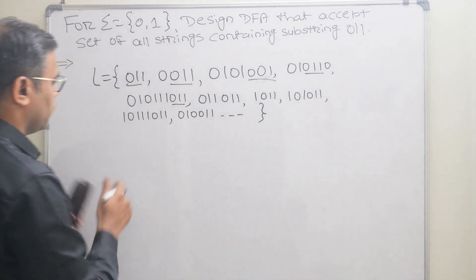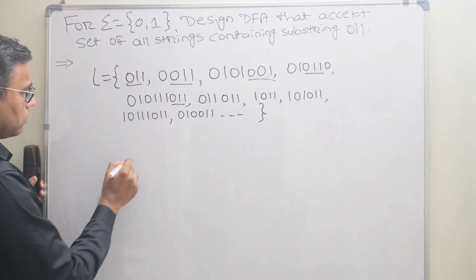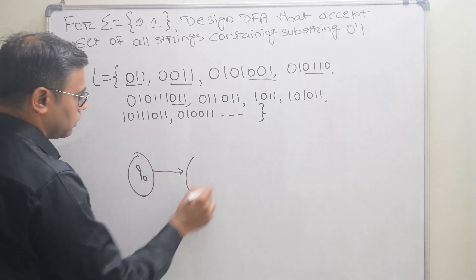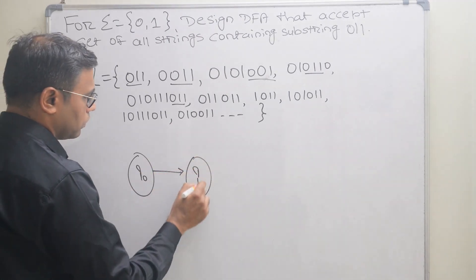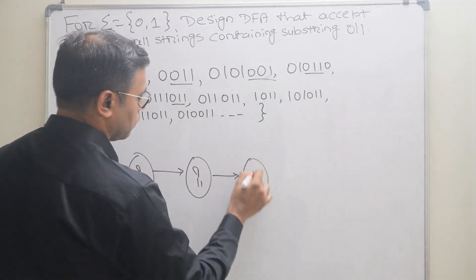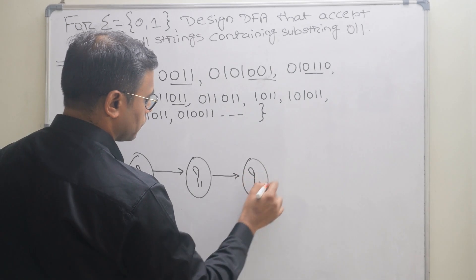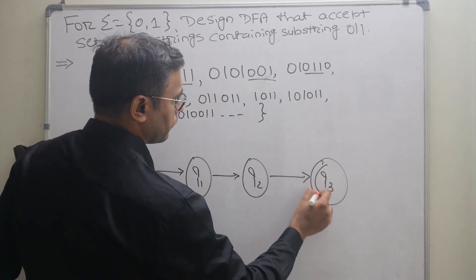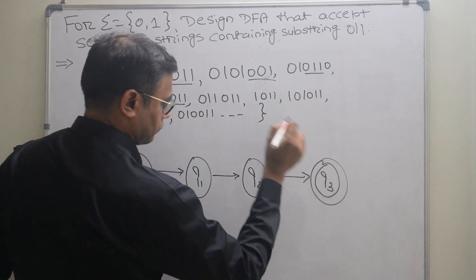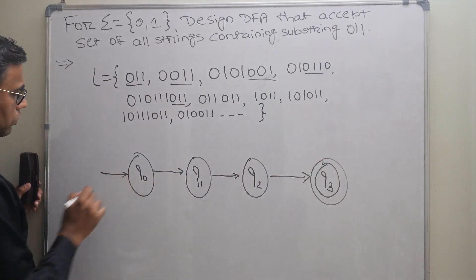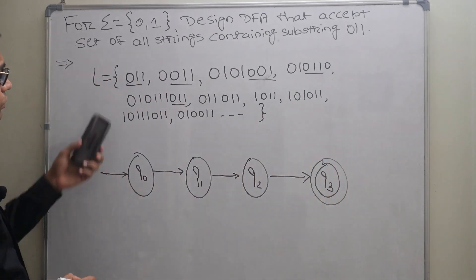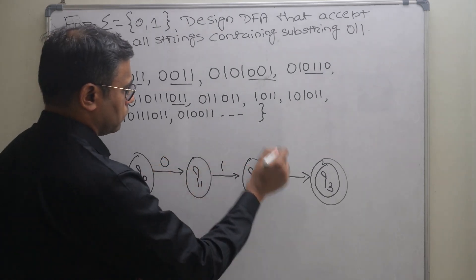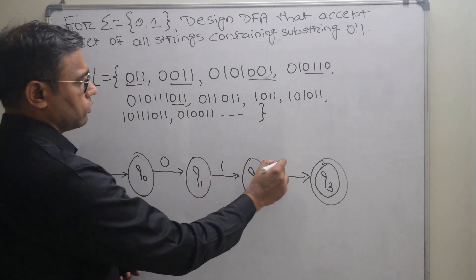We draw four states: q0, q1, q2, and q3. q3 is the final state and q0 is the initial state. The substring we are targeting is 0-1-1.